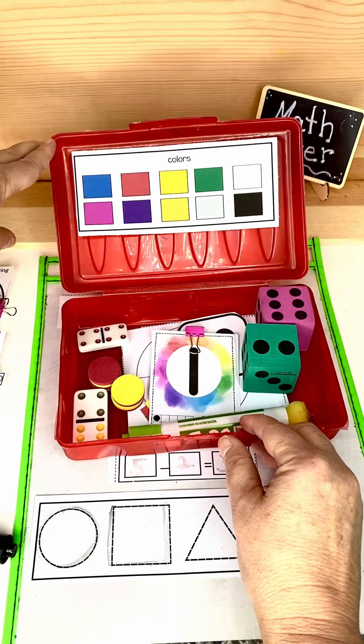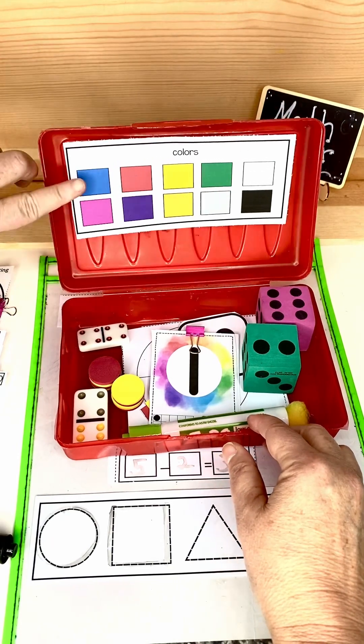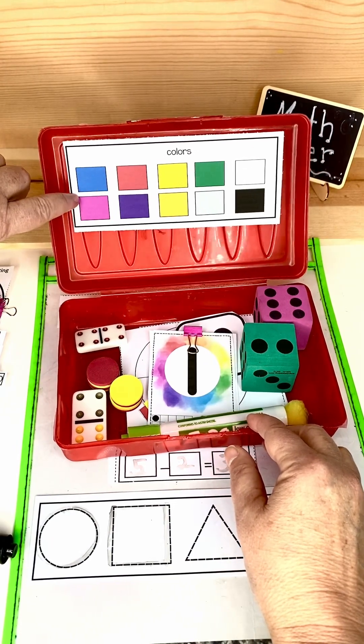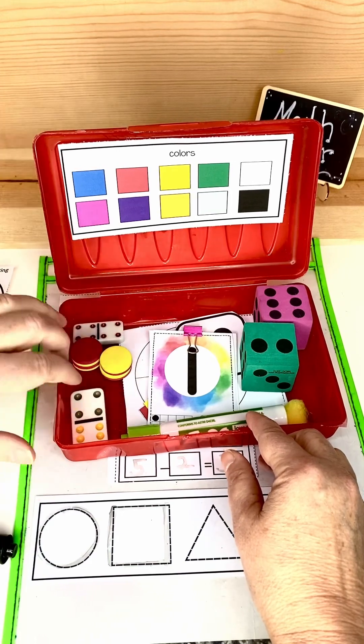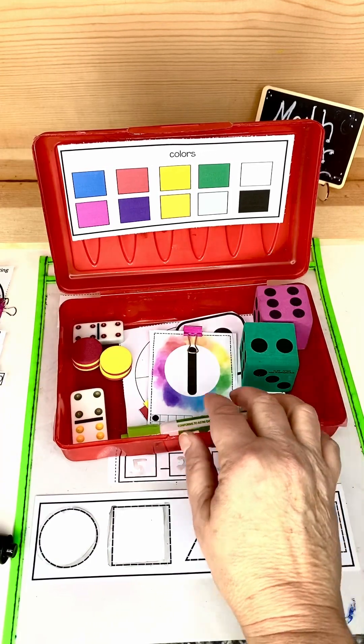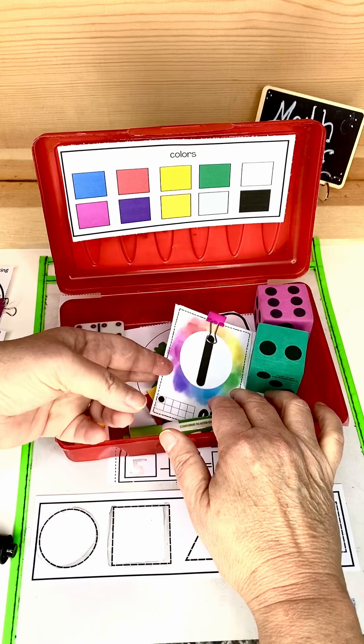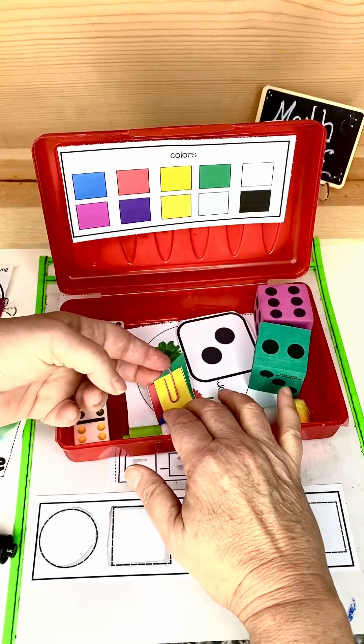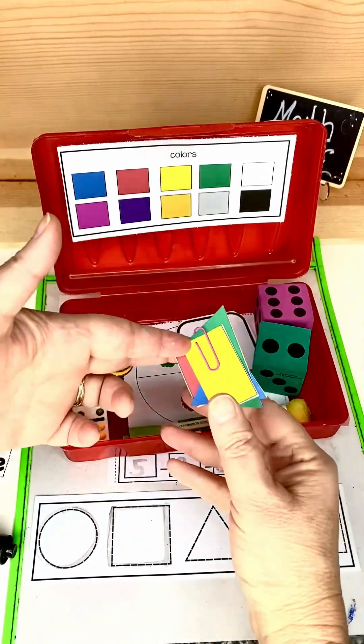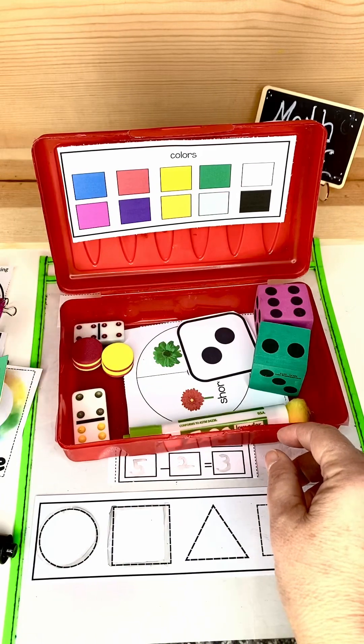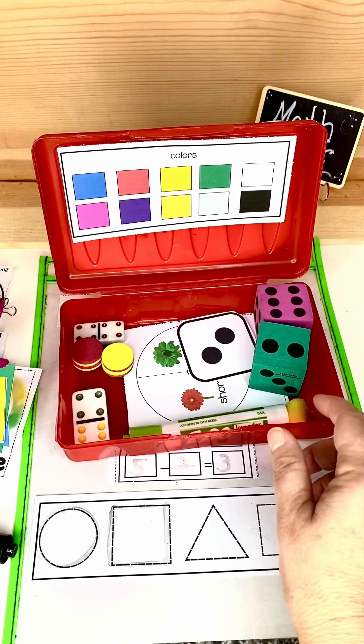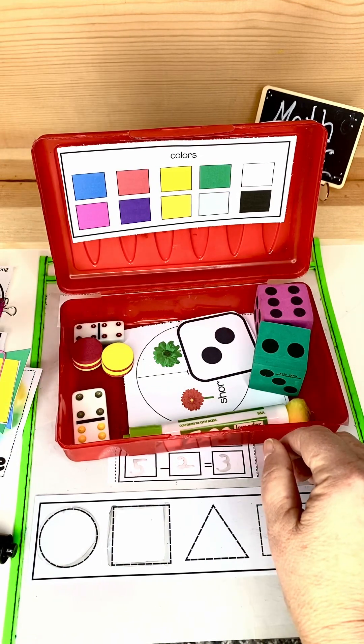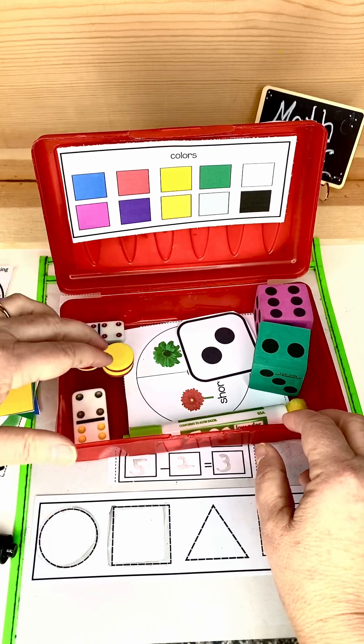These should change out throughout the year depending on what skills you're working on. You've got a color chart that goes inside. You can add your manipulatives. If you don't have manipulatives, there are some provided that you can print out like these. And there's coins, there's fish, there's all kinds of manipulatives that you can add to it if you don't have any yourself, or you can add some yourself.